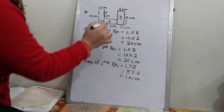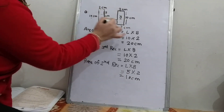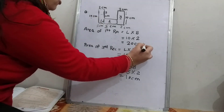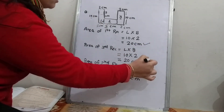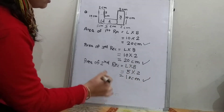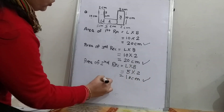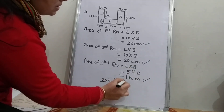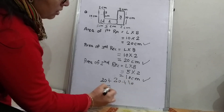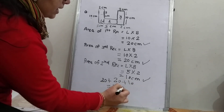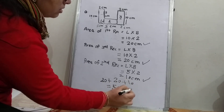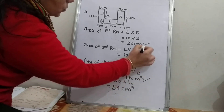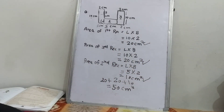Now to find out the area of this complete figure, we do: area of first rectangle plus third rectangle plus second rectangle. So 20 plus 20 plus 10, it will be 50 cm². Here also we have to put square, because we are finding area, so the unit is cm².